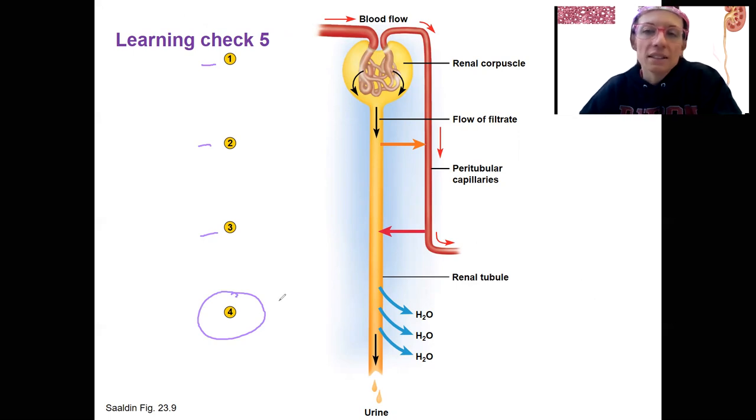Number four is part of reabsorption. What do you think this is referring to? Reabsorption of water is specifically water conservation. So water being removed from the urine. This happens largely in the collecting ducts. That's why it can be thought of as kind of a separate process. But it is a mechanism, a type of reabsorption, conservation of water.